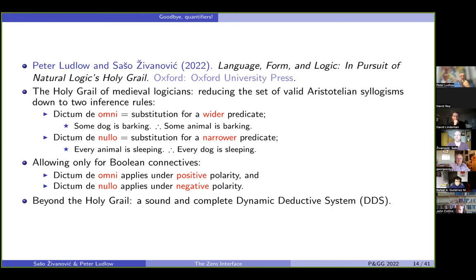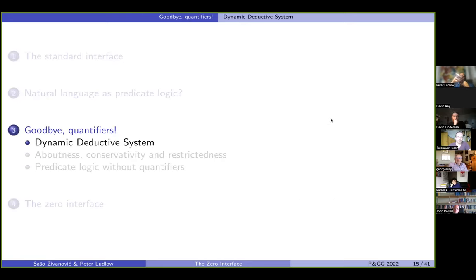But we go further than that. And we actually then develop our own deductive system that we call dynamic deductive system that is sound, that is complete. And that kind of works in the spirit of these two rules, dictum de omni and dictum de nullo, in the sense that, as we will see, it can do the same as here. So dog replaced by animal, animal replaced by a dog. So the replacements, the substitutions can take place inside the formula.